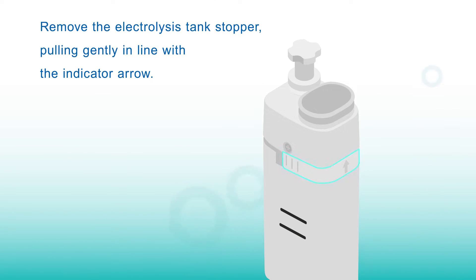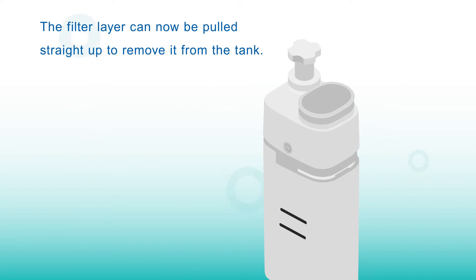Remove the electrolysis tank stopper, pulling gently in line with the indicator arrow. The filter layer can now be pulled straight up to remove it from the tank.